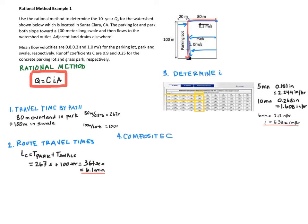One more thing we need to do before we use that equation for the rational method is to figure out the C value that we're going to use. And so we're going to calculate a composite C value based on the C value given for the park and the parking lot.